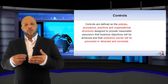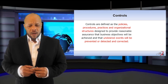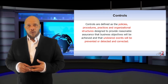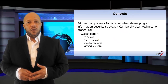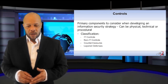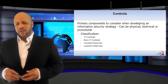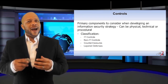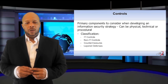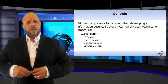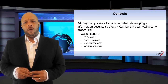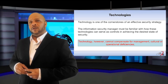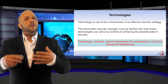So let's talk about some of the controls that we are going to introduce into our environment. What are they? They're simply policies, procedures, practices, and organizational structures to help us prevent undesired events or detect and correct them when they happen. These controls are one of the primary components of our information security strategy. Keep in mind they can be physical, technical, or procedural in nature — it really depends on what is indicated and what is going to be the best fit for the organization. Not everything has to be technically implemented. There are many controls you can put in place by paper — simply a policy of how we're going to act and behave. An acceptable use policy would be a good example. Technology is one of the cornerstones of an effective security strategy, it's just not the end-all be-all to it.